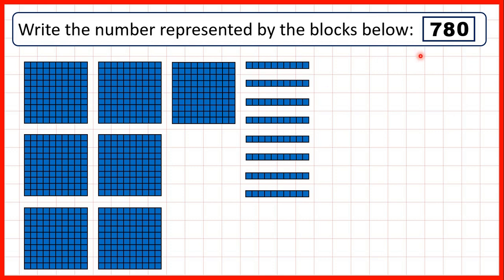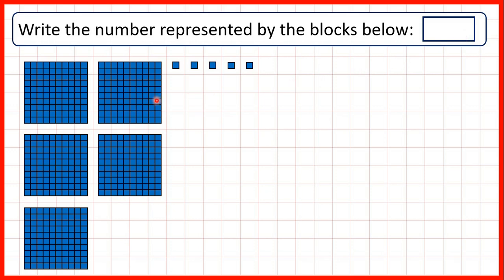In a three-digit number, we need digits for our hundreds, tens, and ones. So if we don't have any blocks of a certain place value, we need to write a zero as a placeholder. Here we can see that we have five hundreds, but this time we don't have any tens, so we need to write a zero as our tens digit. And then we have five ones, so that's five as our ones digit, giving us the number five hundred and five.